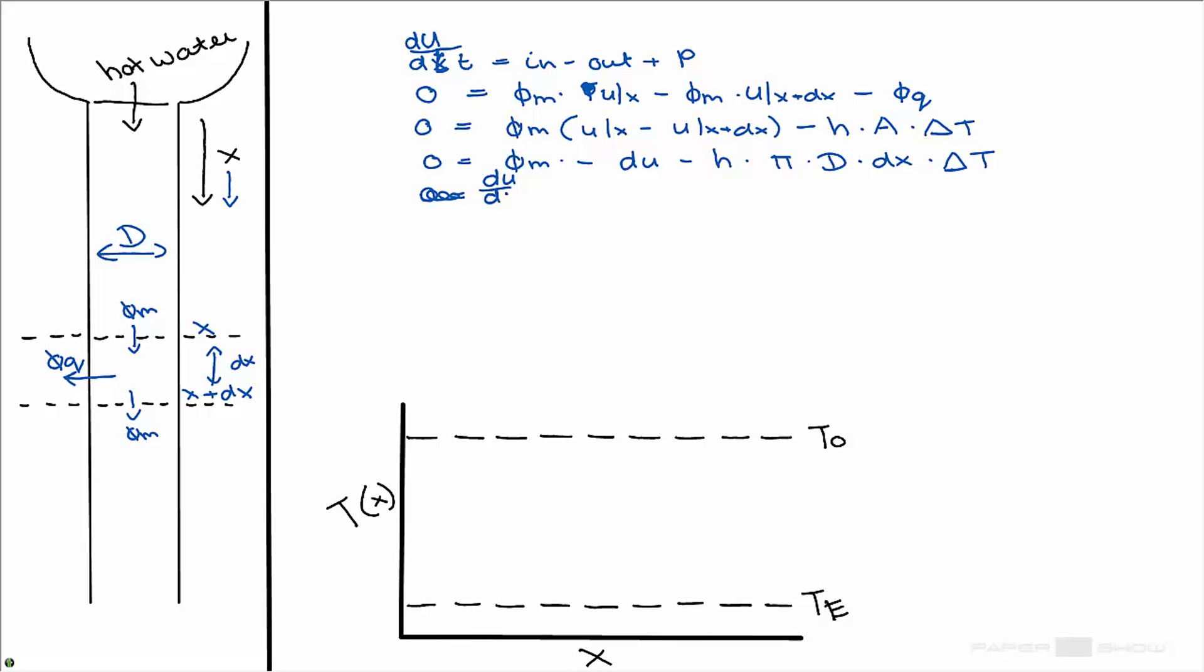If I rewrite this again to a differential form, so I take the du and dx at this side and I take this at that side. For delta T I'm using the T at the spot x minus the T that's the environment, and this is assumed to be constant. We get this equation in which the difference in internal energy is also the difference in cp times T, in which cp is constant in temperature.